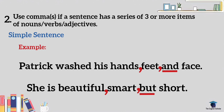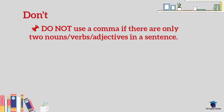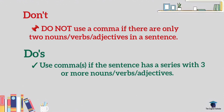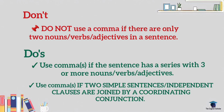Let's have a recap with the dos and don'ts. The don't: do not use a comma if there are only two nouns, verbs, or adjectives in a sentence. The dos: use a comma if it is a series with three or more items (nouns, verbs, or adjectives); and use a comma if two simple sentences or independent clauses are joined with a coordinating conjunction.